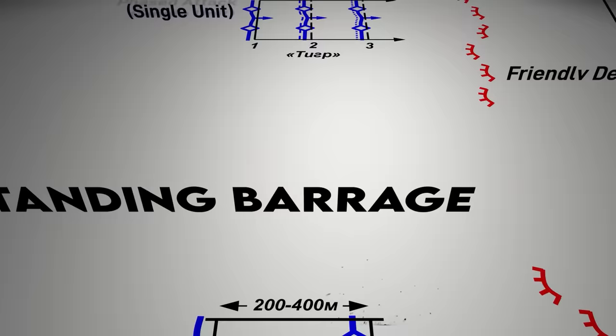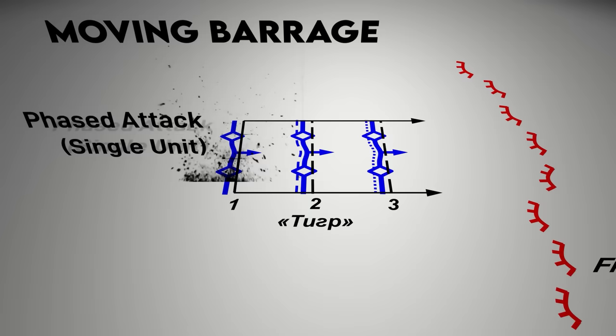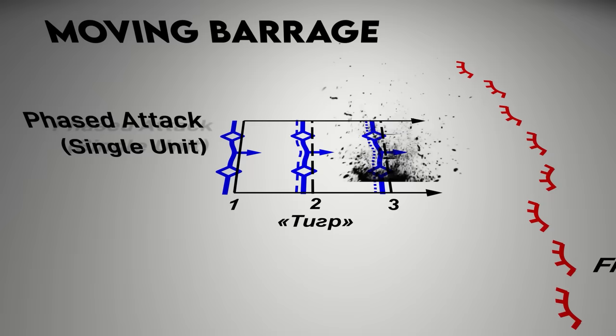Adding arrows to the standing barrage symbol facing the direction of travel indicates a moving barrage, where each firing line is targeted sequentially, starting further away from friendly troops and moving in closer. This creates more consistent resistance of the head of the enemy advance specifically to slow their approach to friendly units.